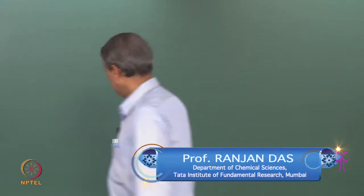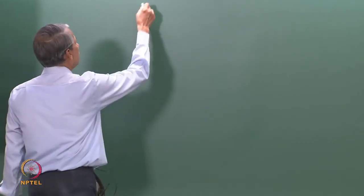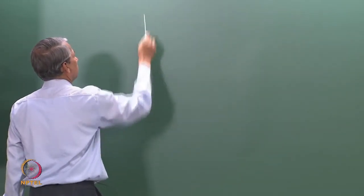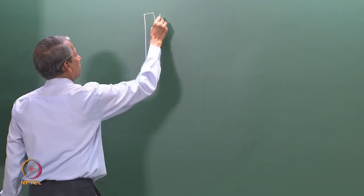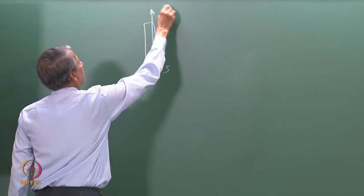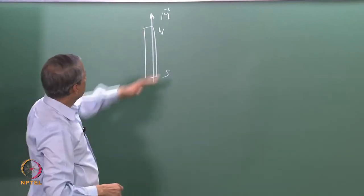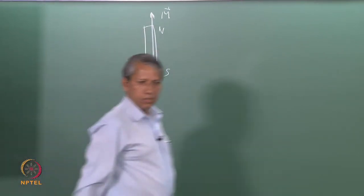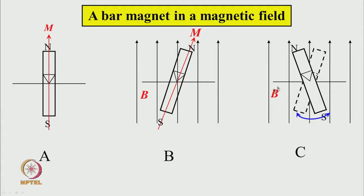We started our discussion of the motion of a magnet in a magnetic field. We have seen earlier that if we keep a bar magnet in a magnetic field, it undergoes to-and-fro motion. This is the magnetic moment placed in a magnetic field and it undergoes to-and-fro motion. We call this motion oscillation.